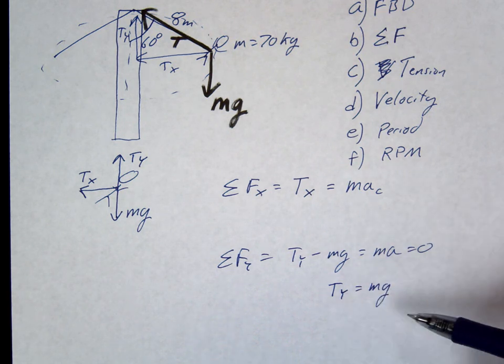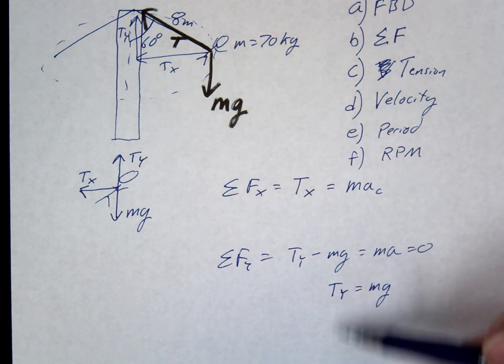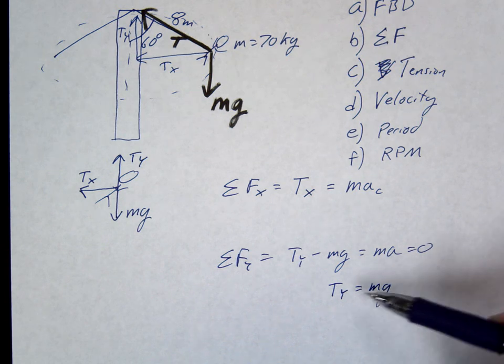And that's what we just said. These are in equilibrium. We're not falling down. These are in perfect balance here, Ty and mg.